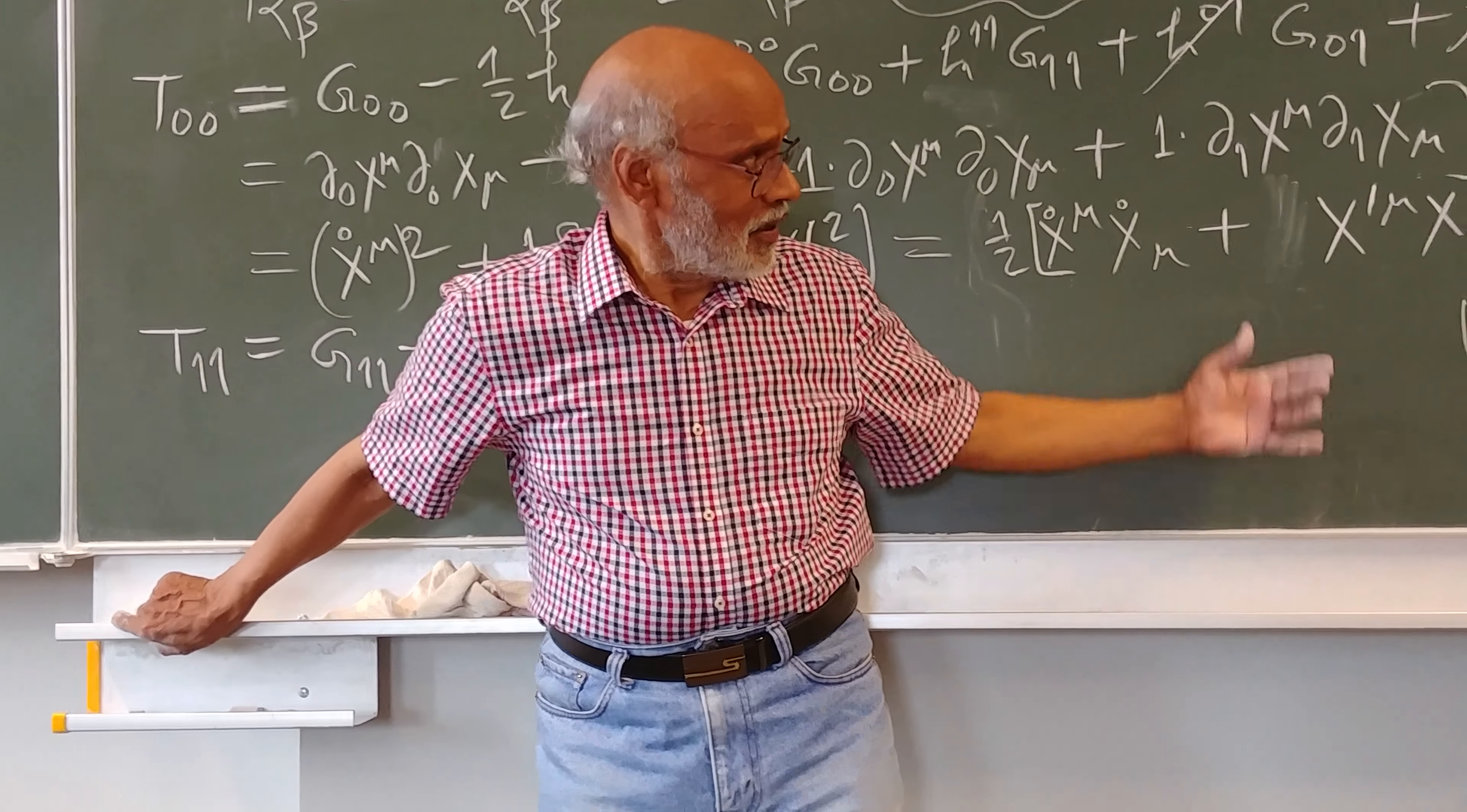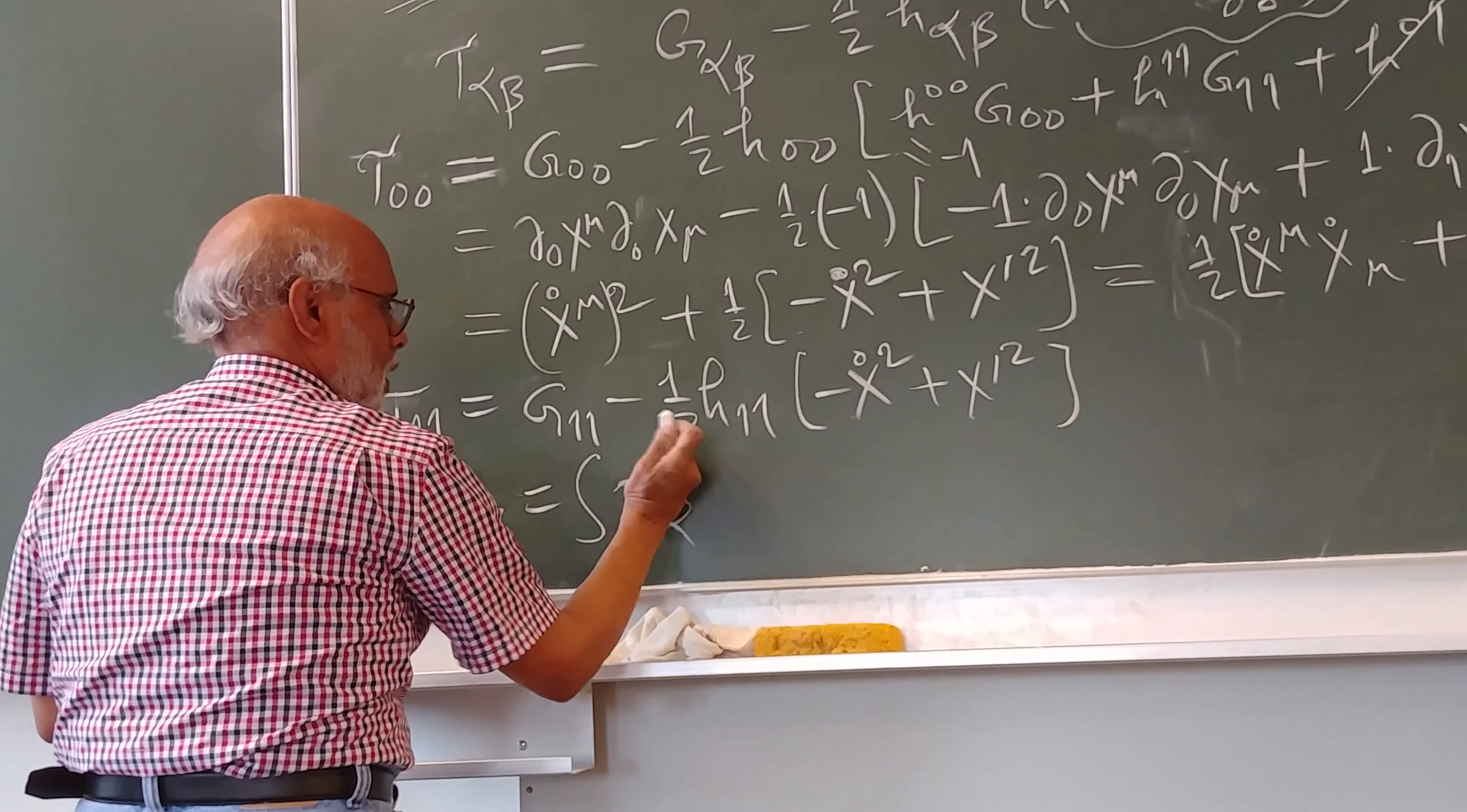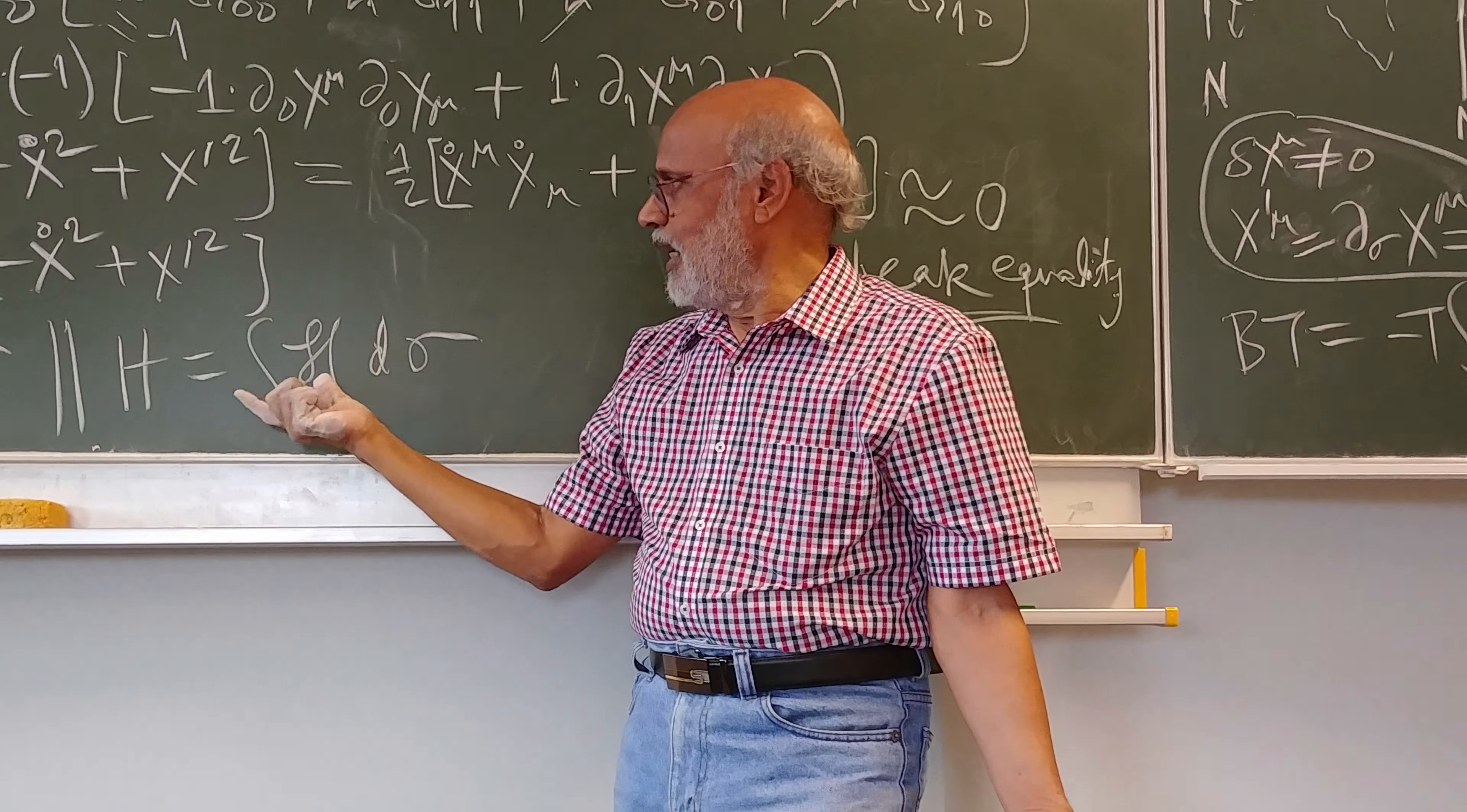So here in this particular example, the canonical Hamiltonian density itself vanishes. Although I have written them to be full T, more correctly we could have written calligraphic T, where we could later on define T_{αβ} like that. And similarly you could define H = ∫H dσ. So you sum or integrate your Hamiltonian density over all space. Here it's a one-dimensional space given by σ, and that would give the Hamiltonian.